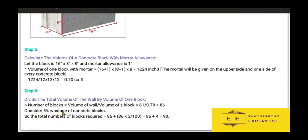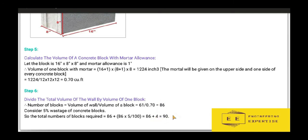Consider 5% wastage of concrete blocks, as some blocks may break. Total number of blocks required: 86 + 5% wastage. Calculating 5% wastage: (5 ÷ 100) × 86 = approximately 4 blocks. Adding these 4 blocks to 86 gives a total of 90 blocks required for a wall of height 10 feet, width 10 feet, and thickness 0.67 feet. Thanks for watching this lecture, stay tuned for the next one.